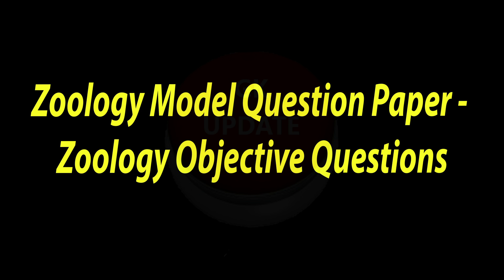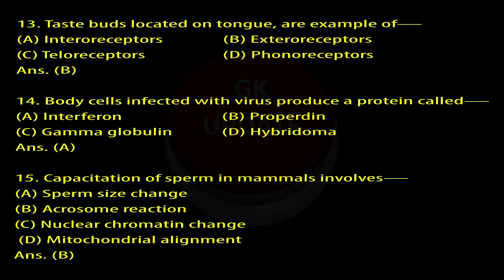Zoology Model Question Paper, Zoology Objective Questions. Question 13: Taste buds located on tongue are an example of — A. Interoreceptors, B. Exteroreceptors, C. Teloreceptors, D. Phonoreceptors. Answer: B.